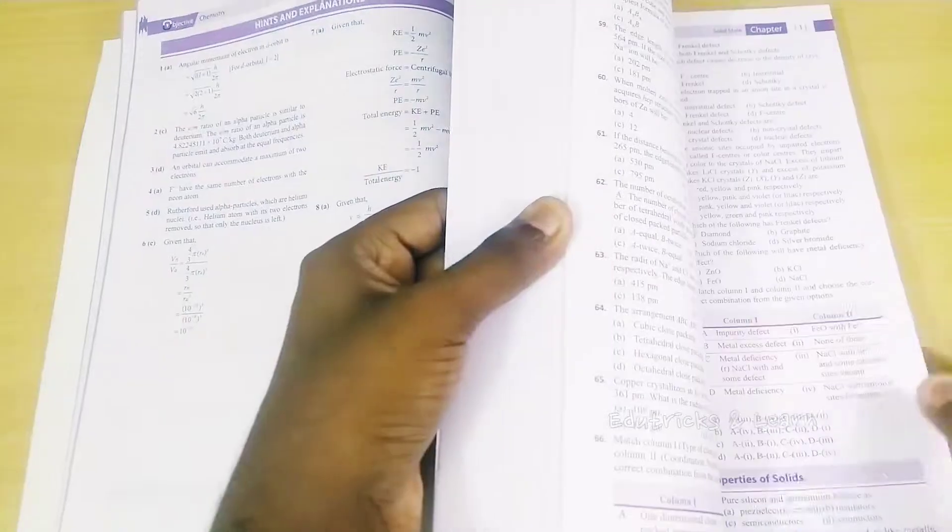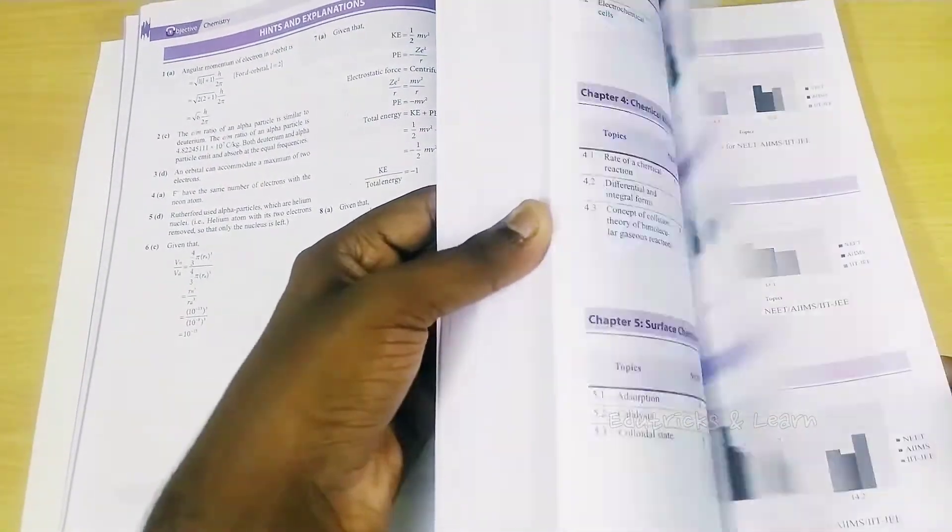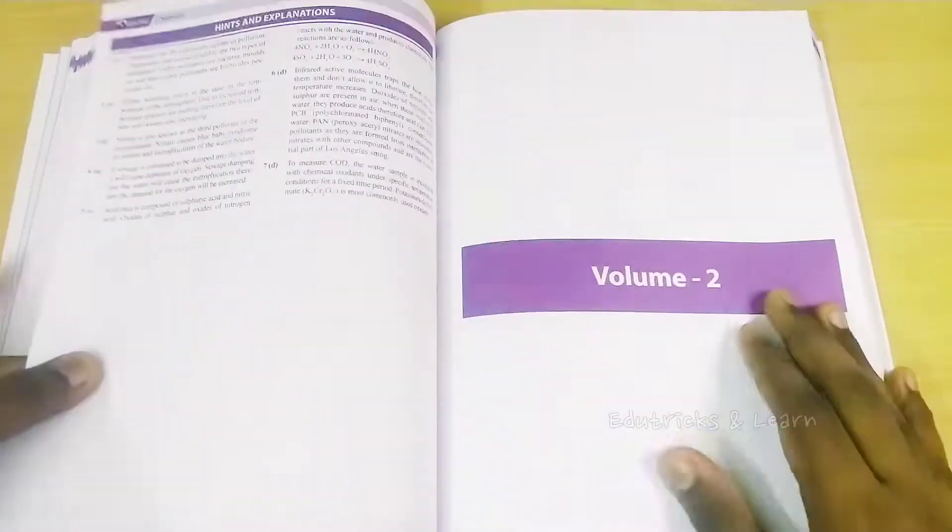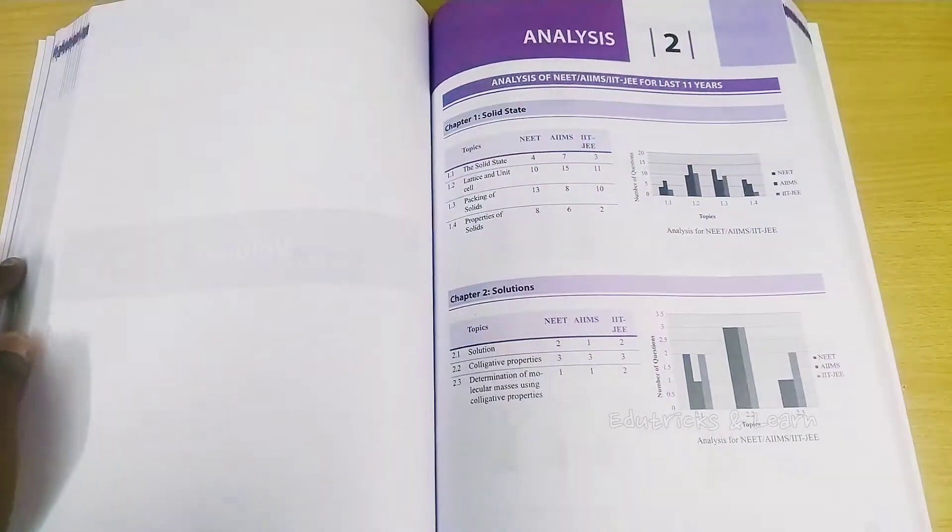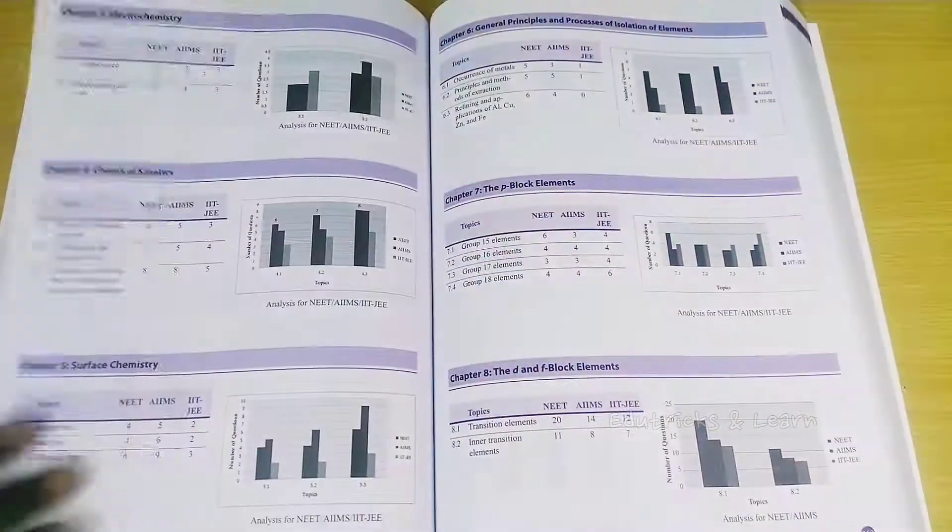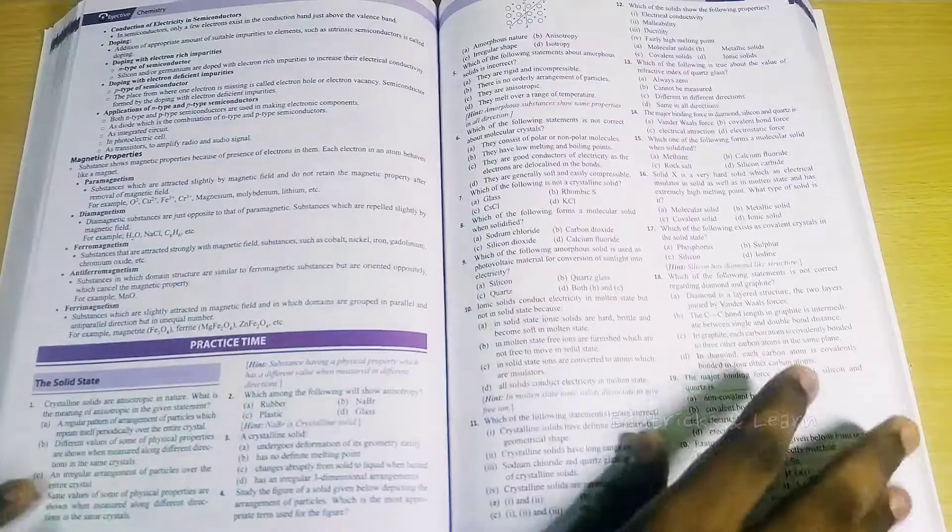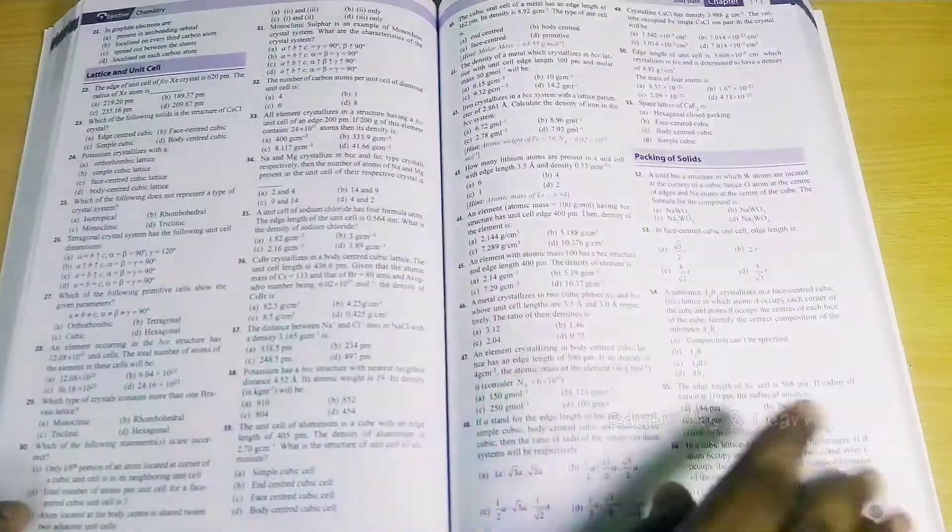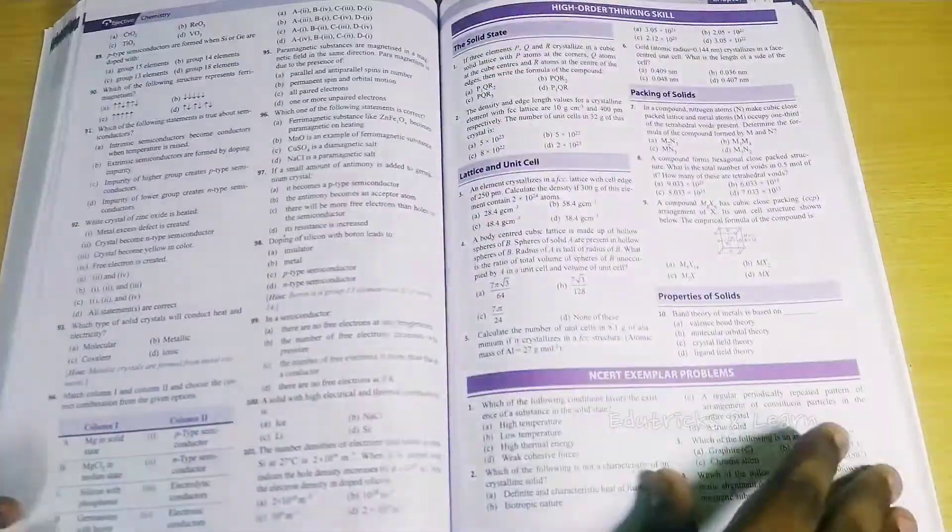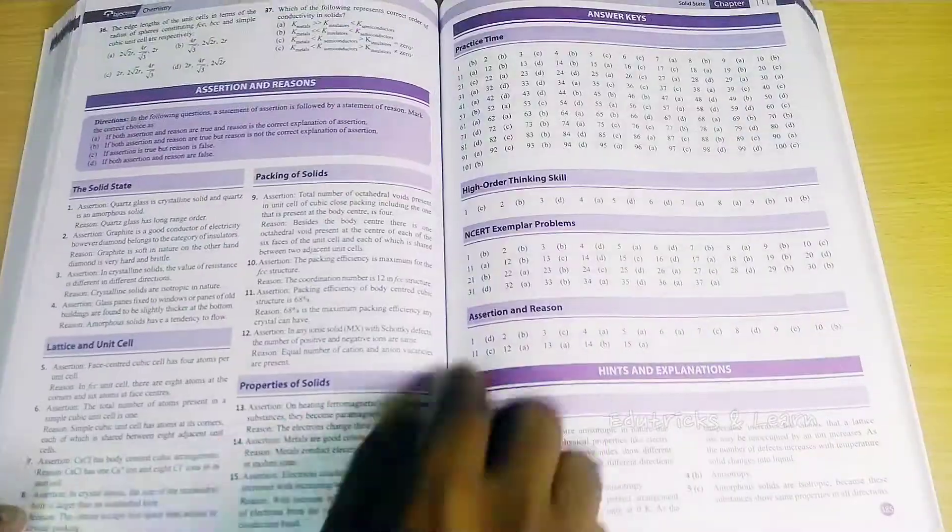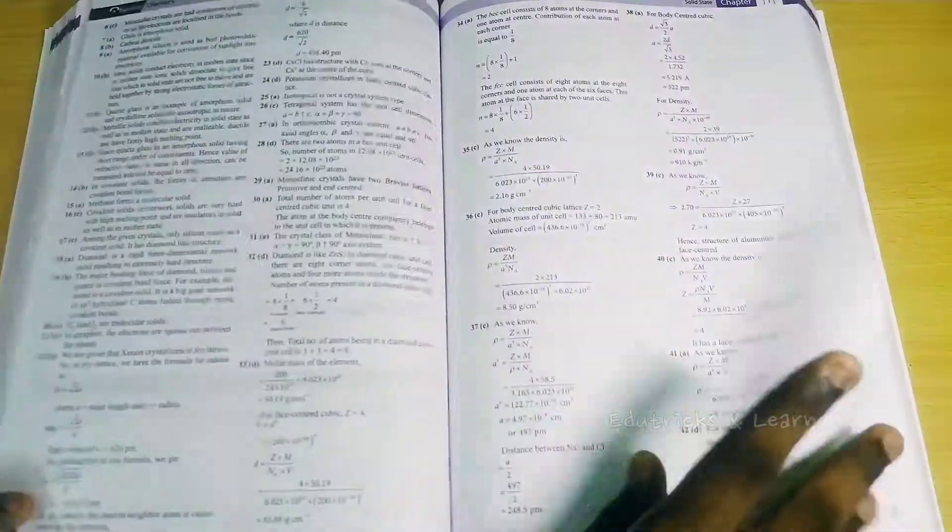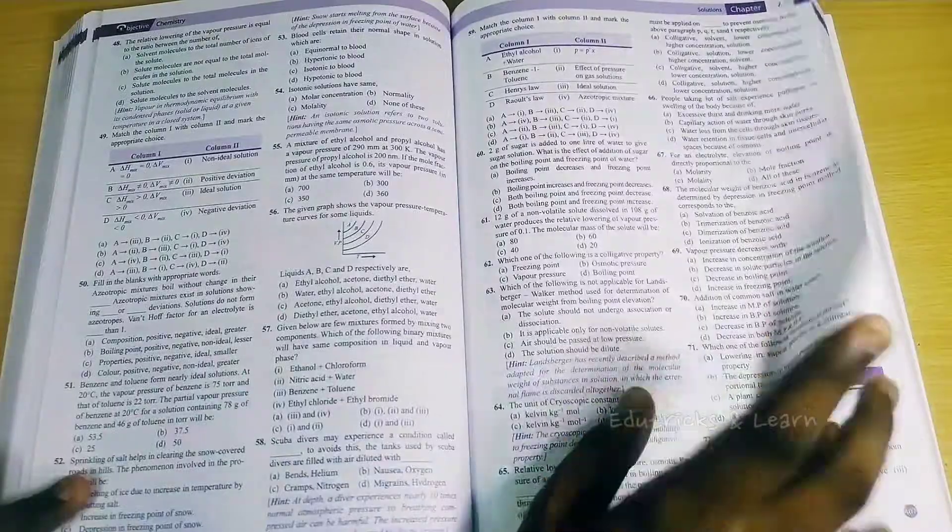This is the format they're following for all chapters. For volume 2 also, which is for class 12, they've given analysis of last 11 years of IIT JEE, NEET, and AIIMS exams. Here also for the first lesson, they're starting with mind map, recap, practice time, topic-wise questions with hints, topic-wise NCERT exemplar, HOTS questions, assertion and reason, then answer keys with explanations. That's all about this book of objective NEET chemistry by Oswal Gurukul.